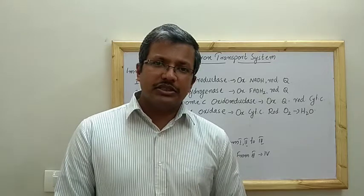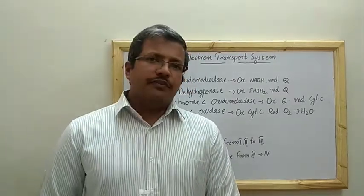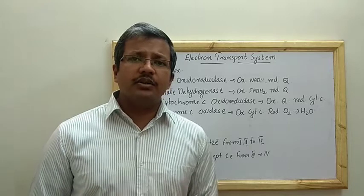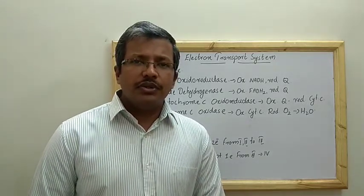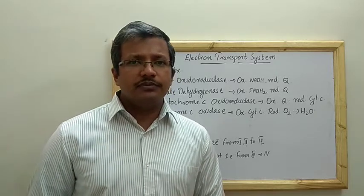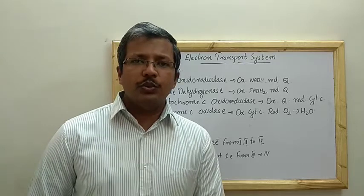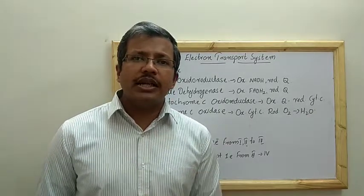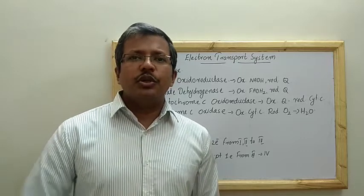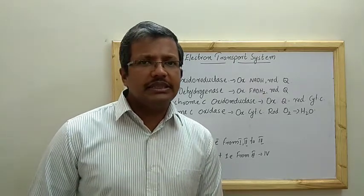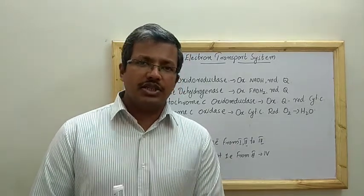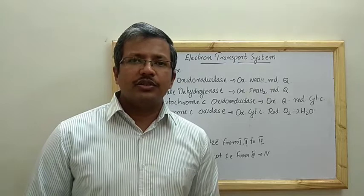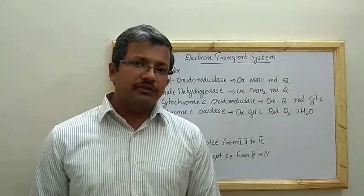So how can you define the electron transport system? It is the first part of oxidative phosphorylation where electrons are transferred from reducing power such as NADH and FADH2 through a series of electron carriers in the respiratory chain, so that a proton gradient can be created to support the synthesis of ATP by the ATP synthase enzyme.